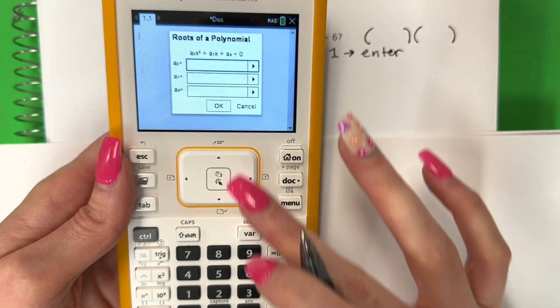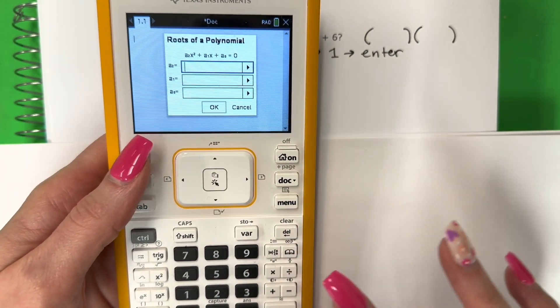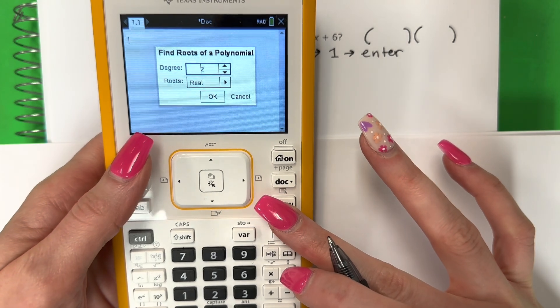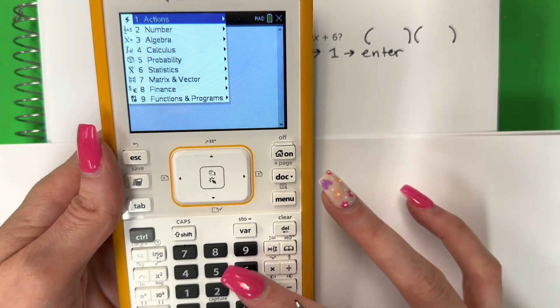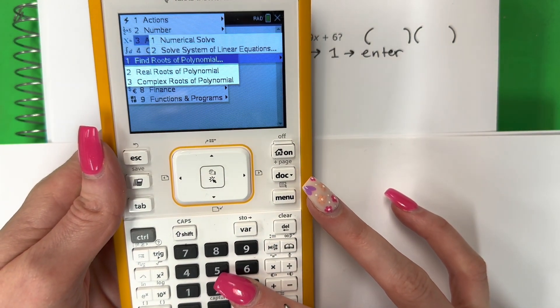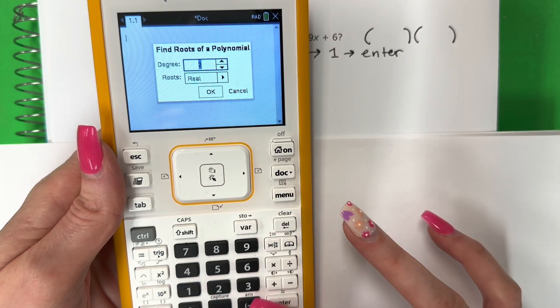Okay, so one more time. Okay, let me go ahead and cancel this real quick. You're going to push menu. Hang on. Menu three. Three. Three. One. Enter.